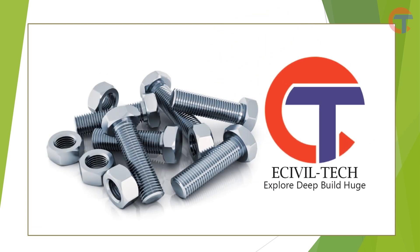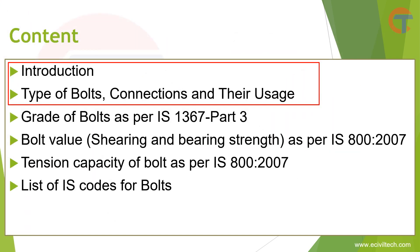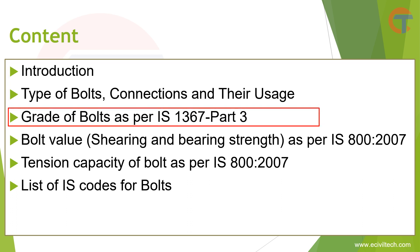Hi everyone, most welcome to eCiviltech. This video is the continuation of the bolt series. In the previous two videos we learned about the basic parts of structural bolts, types of bolts and their uses. In this video we will learn about the grade of bolts and how it is indicated on the bolts. By the end of the video you will be able to identify the grade of bolts just by looking at them. This video is going to be very useful for contractors, site engineers, procurement engineers as well as design engineers.